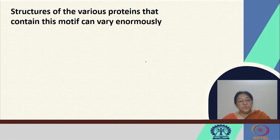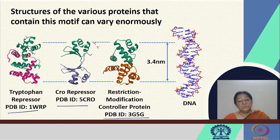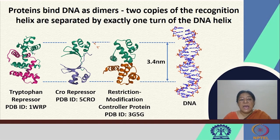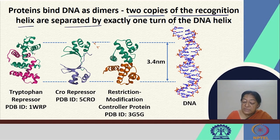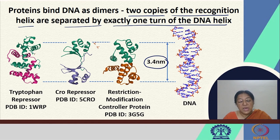Structures of the various proteins that contain this motif can vary enormously, but their binding motif — the helix turn helix motif — is very similar. Interestingly, these proteins actually bind to DNA as dimers. There are two copies of the recognition helix that are separated by exactly one turn of the DNA helix, that is 3.4 nanometers. The two recognition helices occupy the major groove and the complete turn gives them the recognition required for binding.